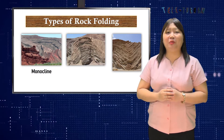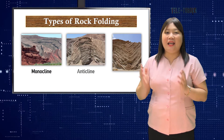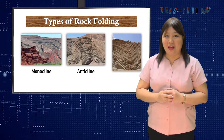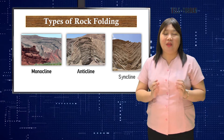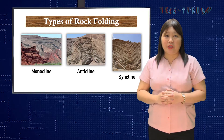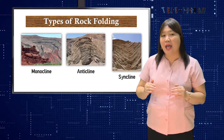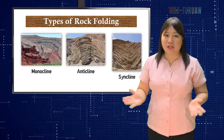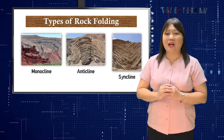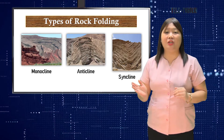An anticline is formed by the folding of rock strata into an arch-like shape. A syncline is a fold that bends downward, causing the youngest rocks to be at the center and the oldest on the outside. A syncline is a trap of stratified rock in which the beds dip toward each other from either side.